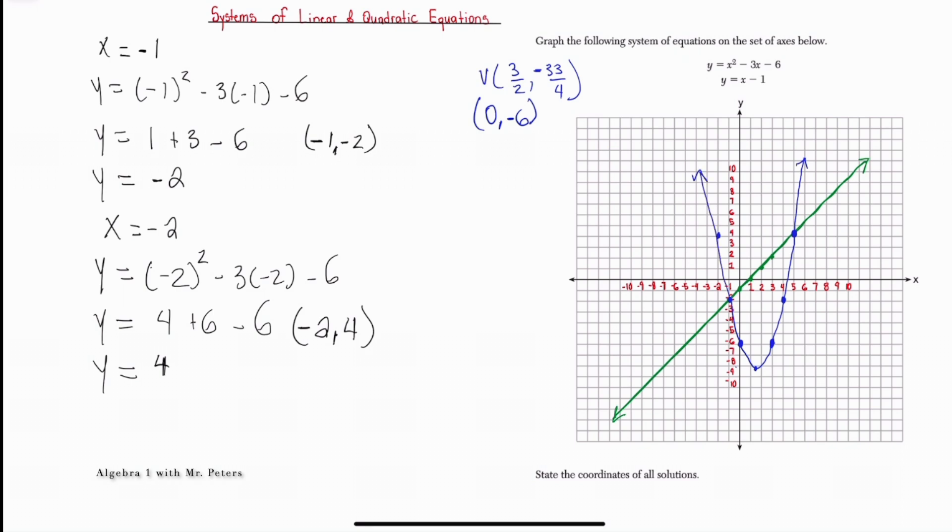So when it asks us to state the coordinates of all solutions, they're talking about where the parabola and the linear equation crosses each other. So when we look at it like that, that means that the solutions are going to be at negative 1, negative 2. So that's the first solution, and then the second solution is going to be at 5, 4. So this is the answer that we're looking for, and this is how you would solve it if we were graphing.